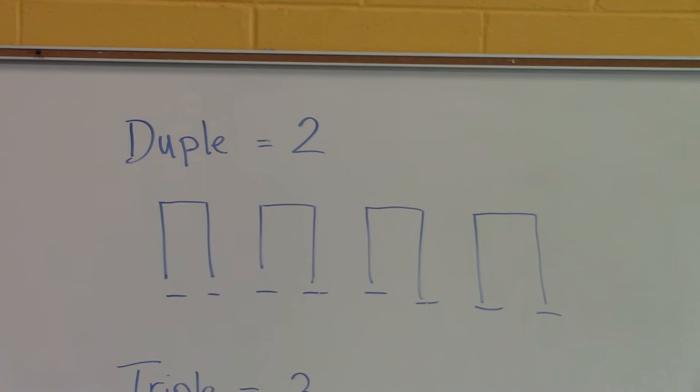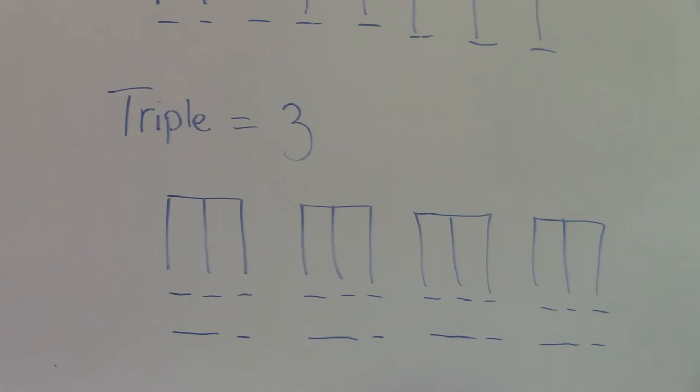You can have the one, two, one, two. Jack and Jill went. Or you can have the one, two, three. One, two, three. Jack and Jill.